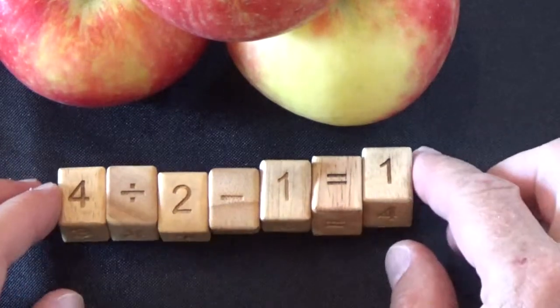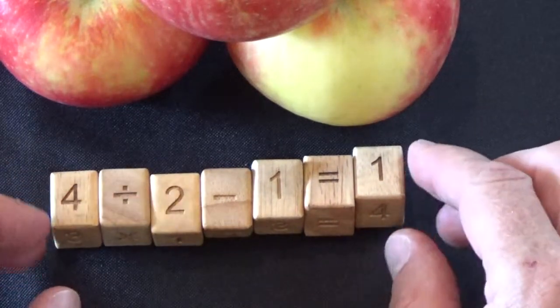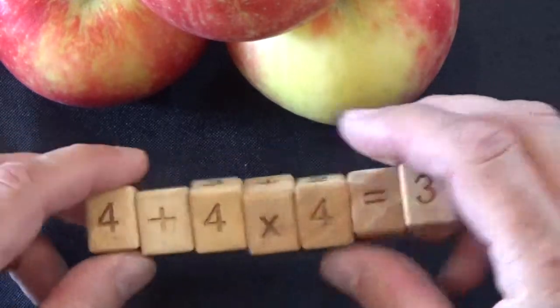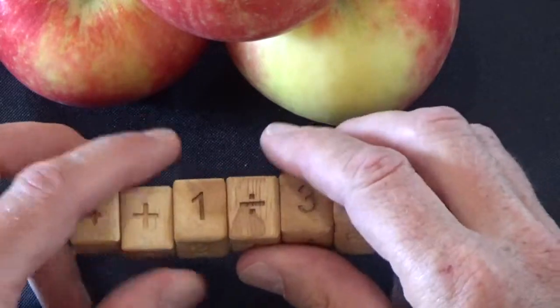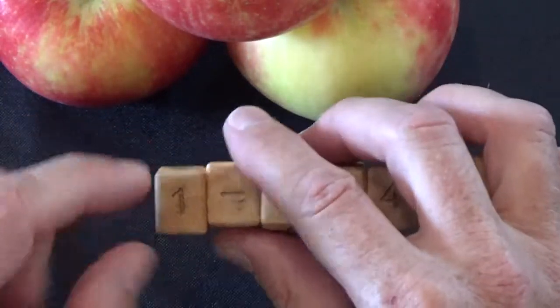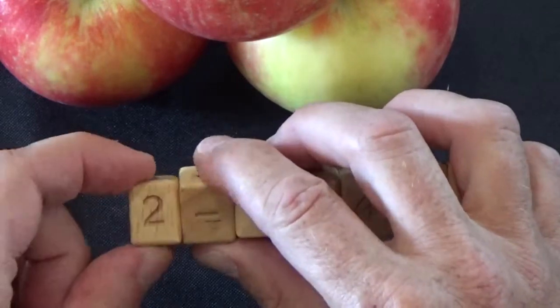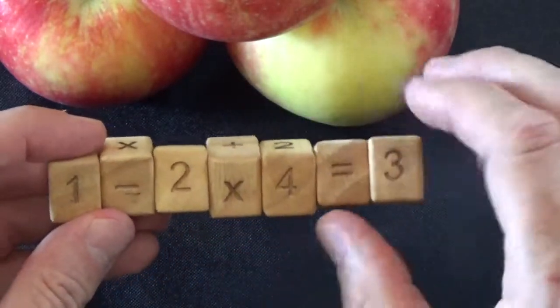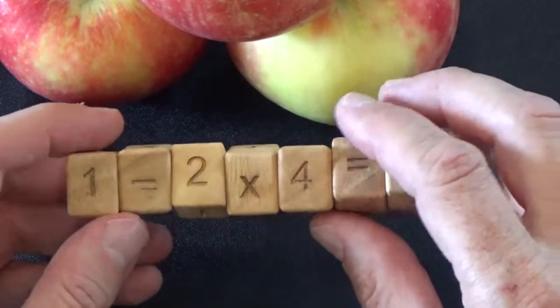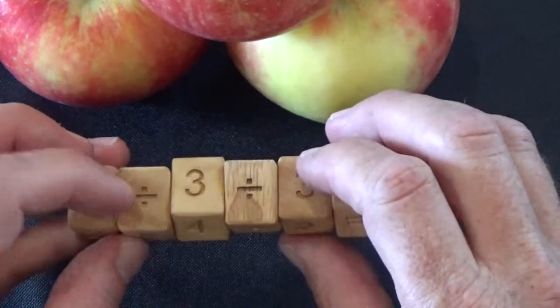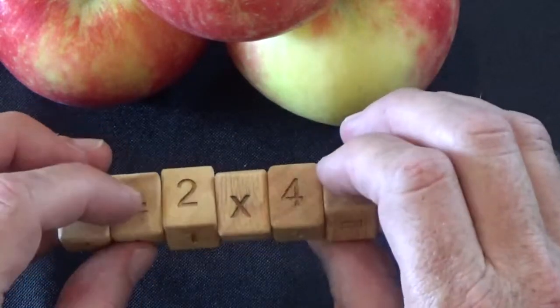What you have here are basically seven little blocks that twist. Four of the blocks have the numbers one through four on them, and three of the blocks have the math symbols: multiplication, division, addition, and subtraction.